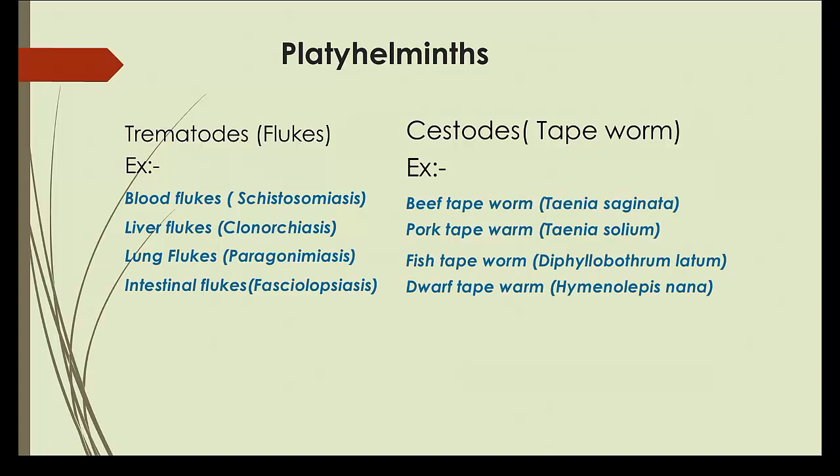You have learned about cestodes at the 10+2 level. Especially Taenia solium, the pork tapeworm, is the cestode that causes neurocysticercosis, which is a very severe condition. This is one condition that can kill a patient. Otherwise, helminths usually cause different kinds of symptoms, especially aggravating anemia in developing countries, but they do not generally kill patients.